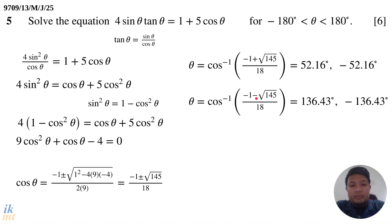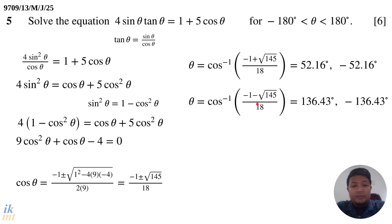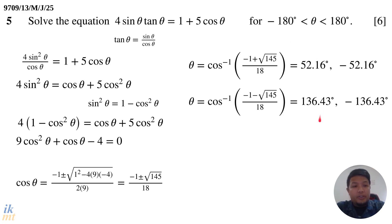Now using the minus case: your calculator will give 136.43 degrees, because when the input to cosine inverse is negative — between negative 1 and 0 — the calculator always gives a second-quadrant answer. Again, due to the symmetry of the cosine function between negative 180 and 180 degrees, we must also include the negative angle. So we have four solutions in total.